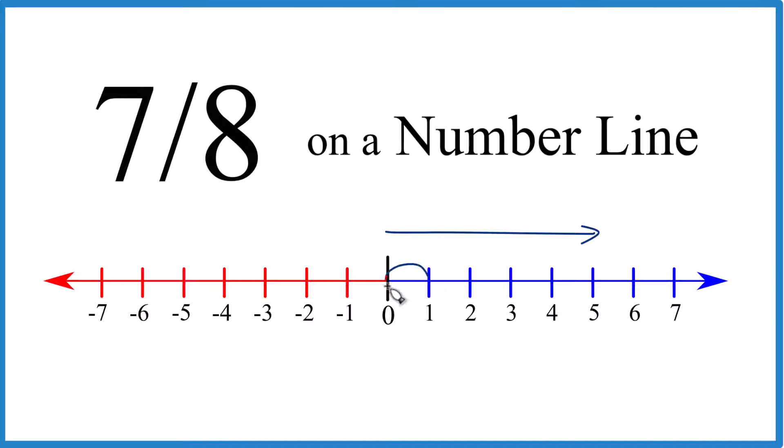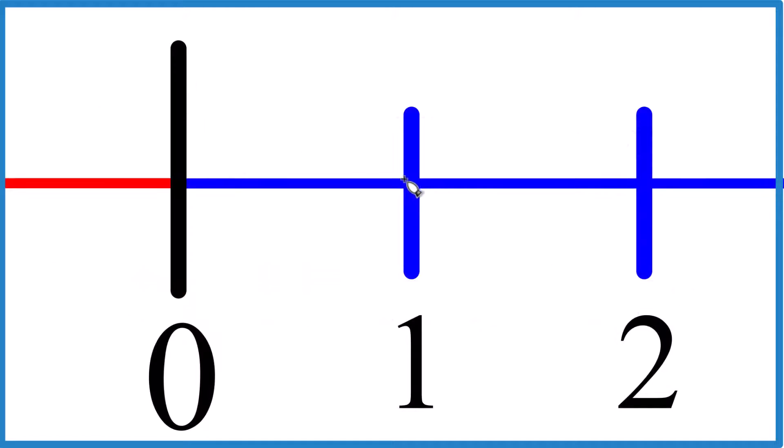So we have to be right here on the number line. That's where we're going to find seven eighths. So let's zoom in right here on our number line and then let's divide this area right here into eight equal pieces, because we're looking for seven eighths, seven pieces out of eight.